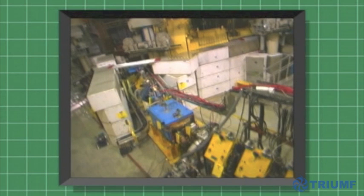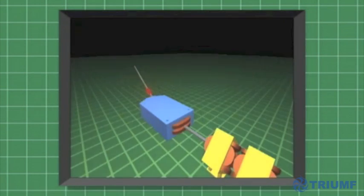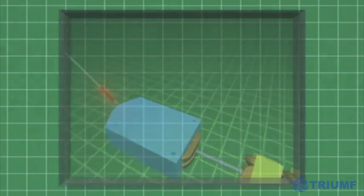However, protons exiting the cyclotron reach velocities of one-third to three-quarters the speed of light, and at these incredible speeds, steering them presents a significant challenge. And here's why.